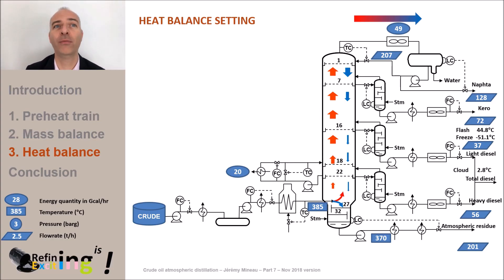As a reminder, we have removed 20 gigacalories per hour thanks to the bottom pump around. This led to a significant decrease in the reflux as well as the top condenser duty. But this has not been without consequences in the quality of products since we have lost about 1.7 degrees C on the flash point of kerosene.